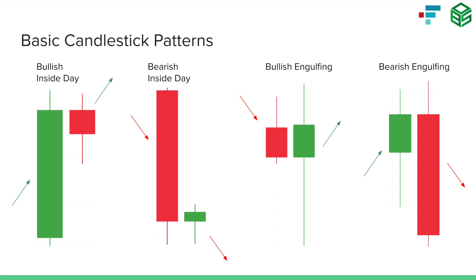We can think of stocks like humans. If we want to jump up, we've got to squat down first. When stocks make big moves to the upside, they have to consolidate their gains before continuing higher. So the bullish inside day signals that the stock is just consolidating its gains and is more likely to continue to the upside than to continue lower.